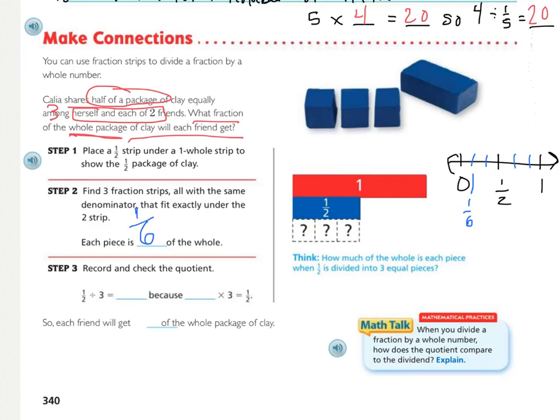And then we're going to record that. So one-half divided by three is going to be one-sixth because one-sixth times three equals one-half. And again, we can even double-check that. We times our whole number times our numerator. That is three-sixth. Three, and then our denominator stays the same. That's three-sixths. That reduces to one-half. That's the same thing. So each friend actually gets one-sixth of the whole package.